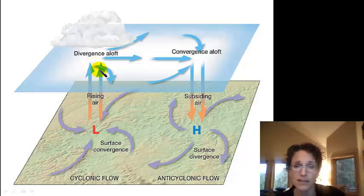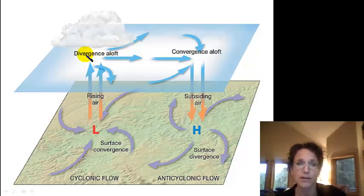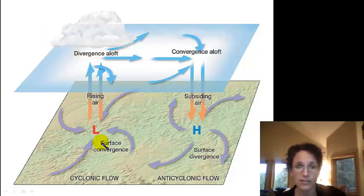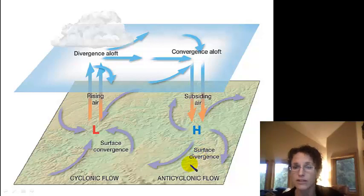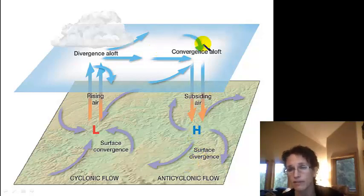What happens is that rising air is going to pile up and it actually creates a high pressure system up here. Then you have divergence aloft but surface convergence here. Now in our high pressure system at the surface where we have subsiding air, we have divergence at the surface but convergence aloft.